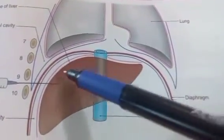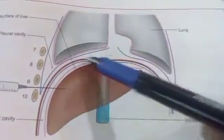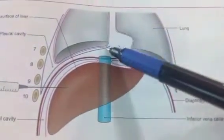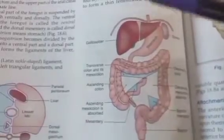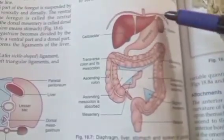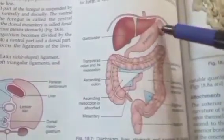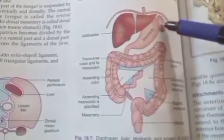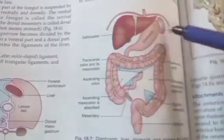The superior relations of the diaphragm include the pleura, lungs, and pericardium. Whereas the inferior relations of the diaphragm include the peritoneum, liver, the fundus of the stomach, spleen, both the kidneys, and suprarenal glands.